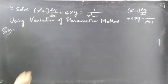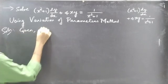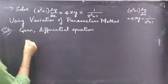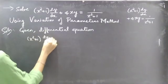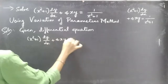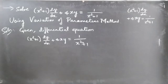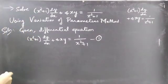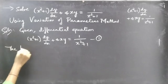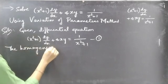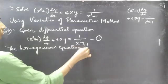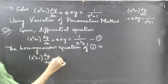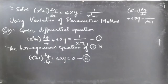We are given a differential equation of order one. The given differential equation is (x² + 1) dy/dx + 4xy = 1/(x² + 1). Consider this as equation 1. Now let's write the homogeneous form of equation 1. The homogeneous equation of 1 is (x² + 1) dy/dx + 4xy = 0. Consider this as equation 2.